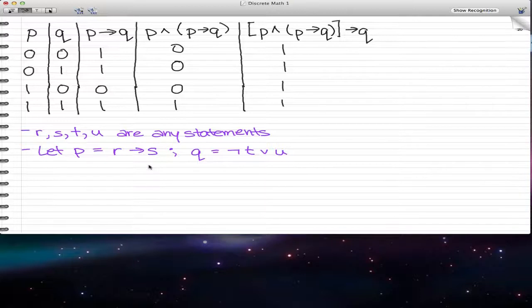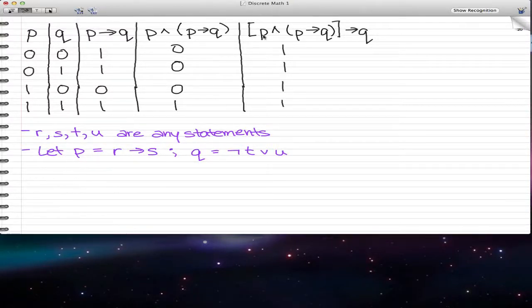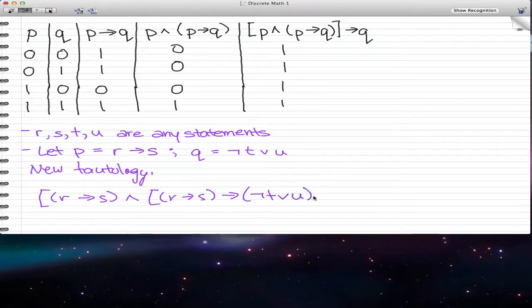Now in this case, what we can do is, using the first substitution rule, we can just replace p and q with the following new tautology. And this new tautology is, we're just substituting variables. New tautology. So it would be r implies s and r implies s implies negated t or u. So all we did here is we just substituted r implies s for p in this statement, and negated t or u, substituted this for q in that statement. And we ended up with this new statement, which is also a tautology.